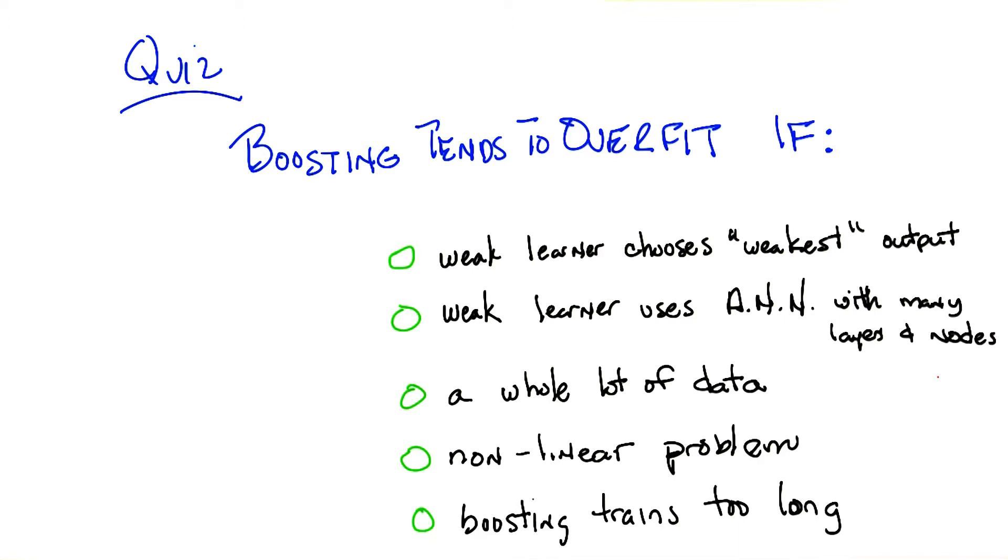Weak learner uses artificial neural network with many layers and nodes. I'm guessing that you wanted me to think about that being something that on its own is prone to overfitting, because it's got a lot of parameters. Sure.